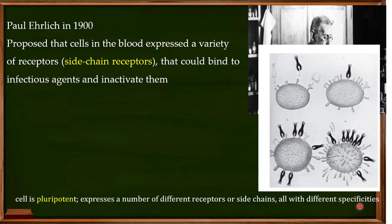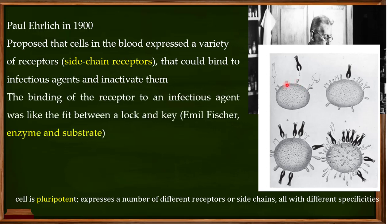For example, if this is a B cell, it is expressing several types of side chain receptors — one type, another one, another one, and so on. So he proposed that cells are pluripotent, meaning they express different types of receptors on their surface, and each receptor has a different specificity: this one would be for one antigen, this one for another antigen, and so on.